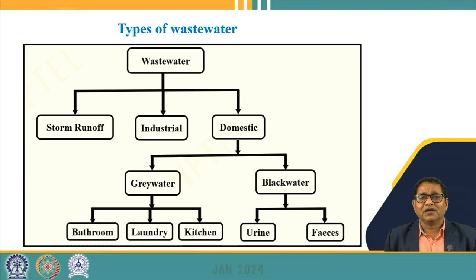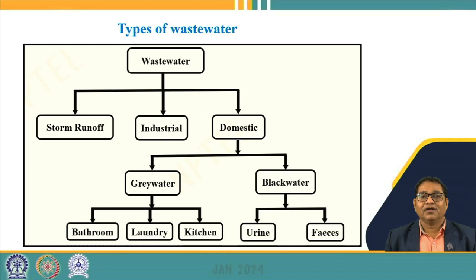Industrial wastewater is the wastewater generated from industries. Different types of industries have different types of water demands. When water is used in different processes, it may contain various types of solid materials, liquid materials, acids, and different types of organic and inorganic impurities. When generated as an industrial effluent, it may contain various forms of impurities: suspended, dissolved, floating and other types.